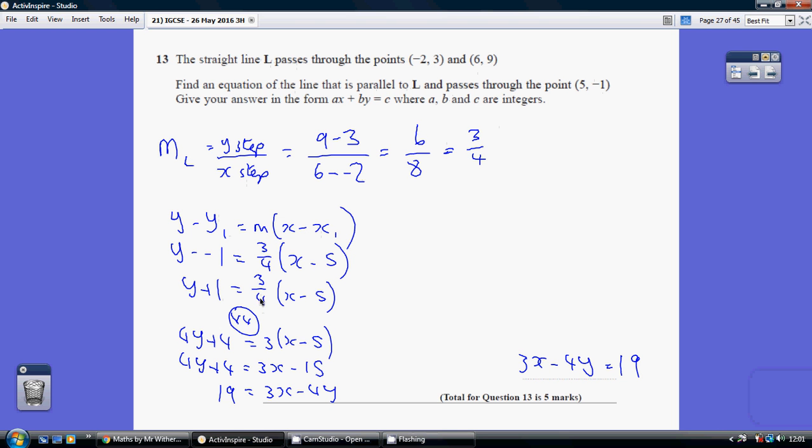Multiplying both sides by 4, I get 4 lots of my left-hand side, 4 times y is 4y, 4 times 1 is 4. On the right-hand side, that's undoing the dividing by 4, but leaving the 3, so 3 lots of x minus 5.